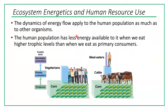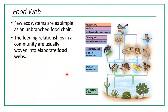We can apply this concept to human populations. Meat eaters are at the secondary consumer level, using more resources than if people were vegetarians. If the population were all vegetarians, the amount of resources needed would decrease, since each trophic level only captures 10 percent of the energy from the level below.